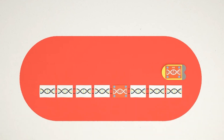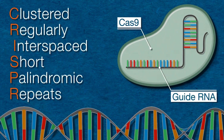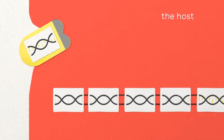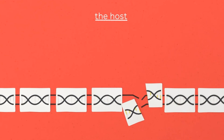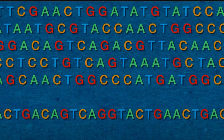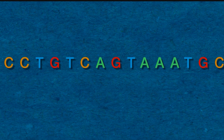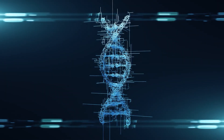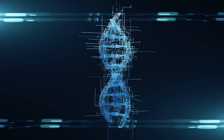At its core, CRISPR-Cas9 works by utilizing a molecule called RNA to guide a specialized protein, Cas9, to a specific DNA sequence within an organism's genome. This protein can then cut the DNA at the desired location. The cell's natural repair mechanisms are then activated to fix the break, which can lead to changes in the genetic code. Scientists can harness this process to insert, delete, or replace specific genes, offering a level of precision that was previously unimaginable.